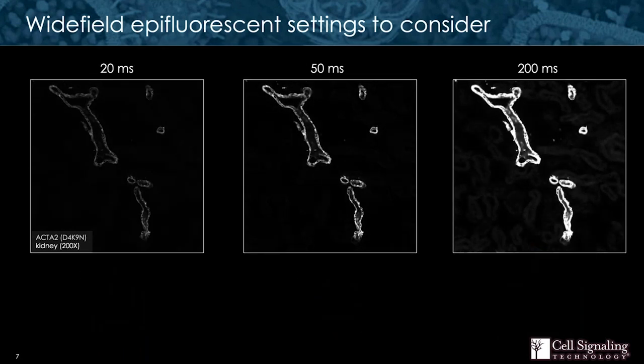When imaging on an epifluorescent microscope, the most powerful tool at your disposal is exposure time. This will determine the number of photons that are allowed to encounter the photodiodes on your camera. Here I'm showing the difference in image quality for smooth muscle actin when you image at 20 milliseconds, 50 milliseconds, and 200 milliseconds.